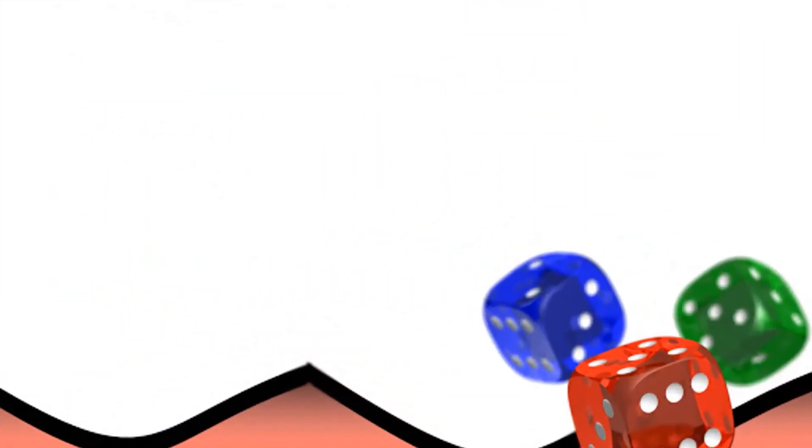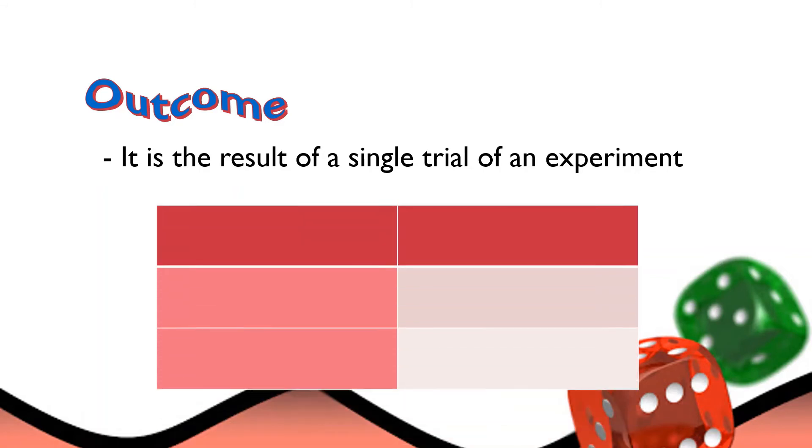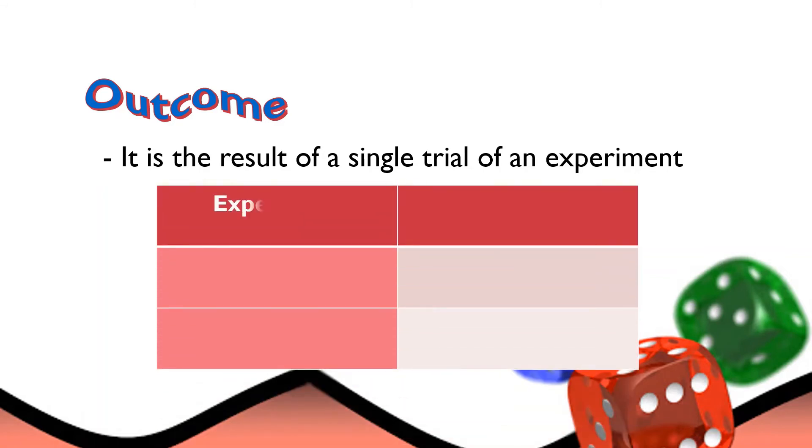Now, for the second term, we have the outcome. So, the outcome is the result of a single trial of an experiment. Try to look at the example. We have here the experiment and the outcome. For our first experiment, we have flipping a coin. What are the possible outcomes when we flip a coin? There are two possibilities or possible outcomes upon flipping a coin. We have the head and the tail.